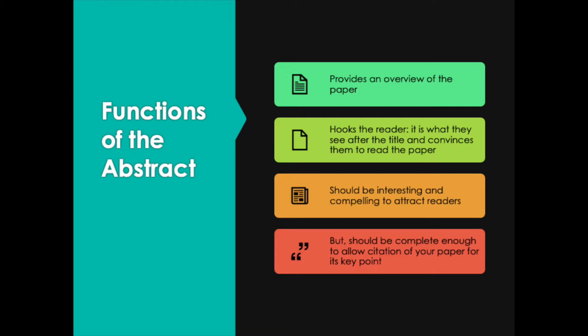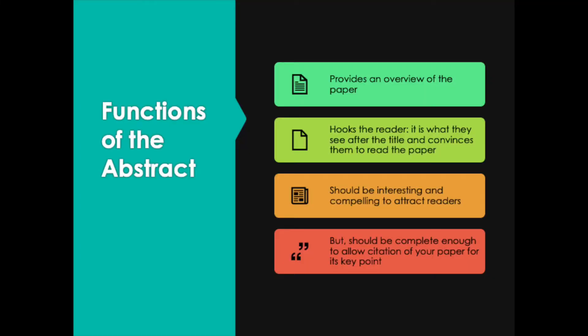So what are the functions of the abstract? Let's take a look at this list. One function is to provide an overview of the paper. The second function is to hook the reader — to convince them to go ahead and read the rest of the paper, so it should be interesting and compelling. On the other hand, it should be complete enough that somebody could cite your paper just from reading the abstract. Maybe you're publishing in a journal that's not open access and some readers cannot access the full paper — all they can access is the title and the abstract. You want them to still cite your paper, so give them enough information to do that.